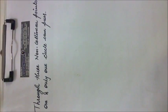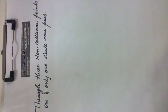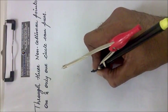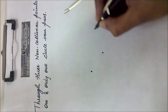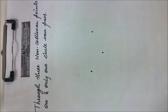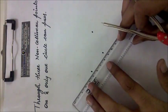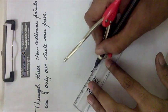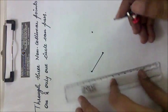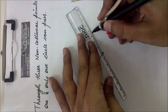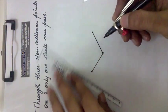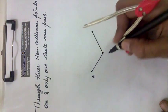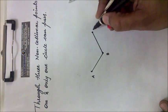Through three non-collinear points, one and only one circle can pass. So we will take three non-collinear points — let them be point A, point B, and point C.